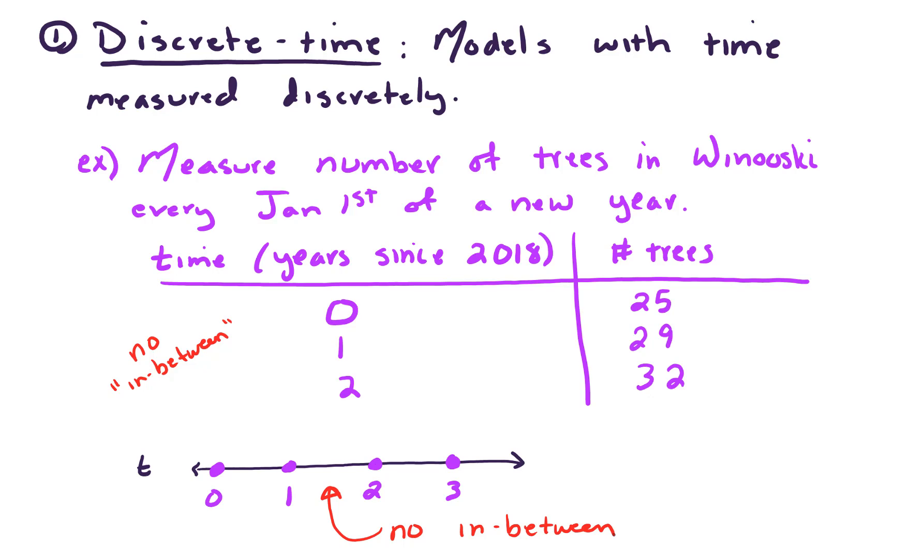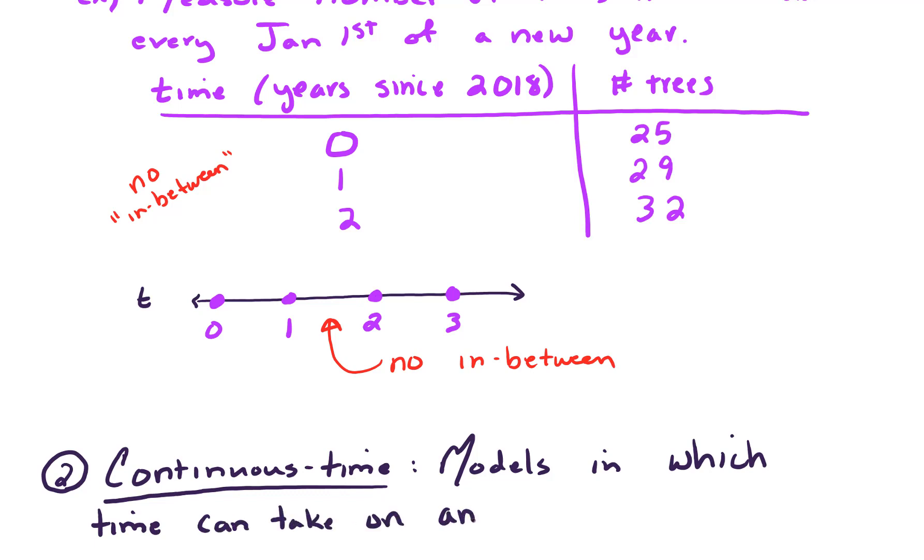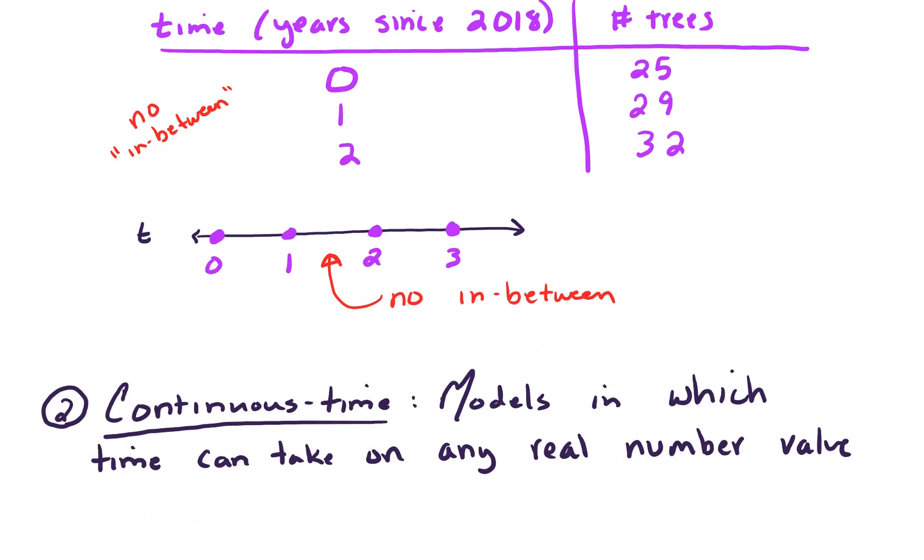The other type of model we're going to look at is called a continuous-time model. These are models in which time can take on any value, any real number value, maybe in a given interval.